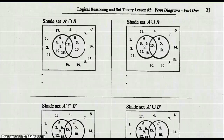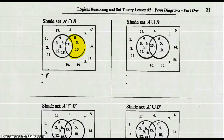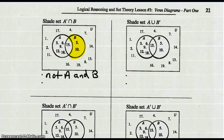Shade the set not A intersect with B. We looked at what not A was — if we intersect that with B, it is just this section. So not A intersected with B — that's how we'd write it: not A, and intersection means and B, so not A and B. Number of elements in not A intersect B would be two; there are only two elements in the shaded section.